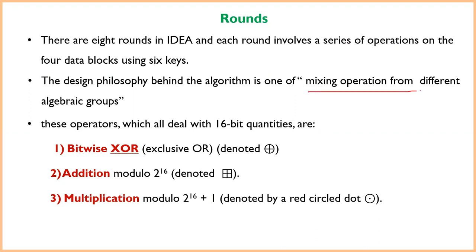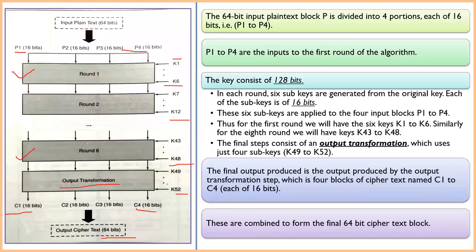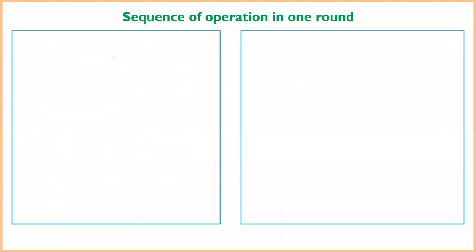Each round uses mixing operations from different algebraic groups applied to 16-bit quantities. The three operations are: bitwise XOR (exclusive OR), addition modulo 2 to the power 16 (denoted by a plus symbol), and multiplication modulo 2 to the power 16 plus 1 (denoted by a circle-dot symbol). These operations are applied across all eight rounds.